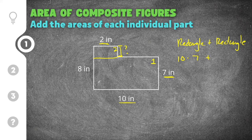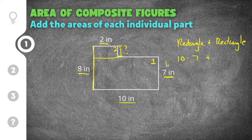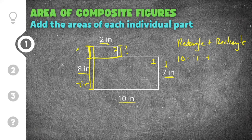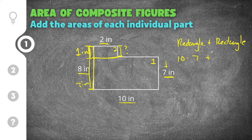To figure out the missing height, we look at the whole side, which is eight inches. The distance on the opposite side is seven inches — the same as rectangle one's height — which means the leftover portion must be one inch. So this side is one inch, and the area of rectangle two is base of two times height of one.